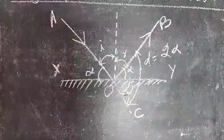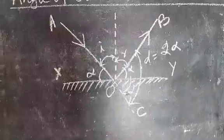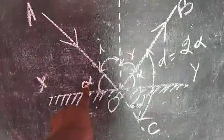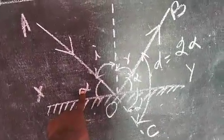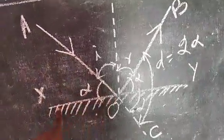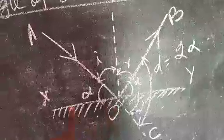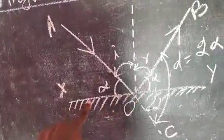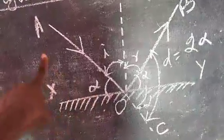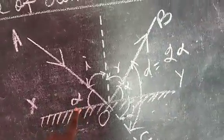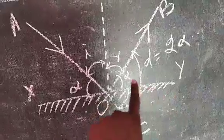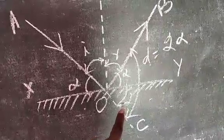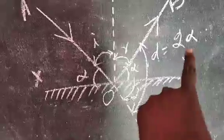The angle of deviation can also be derived using the glancing angle. Alpha is the glancing angle — the angle between the incident ray AO and the reflecting plane mirror surface, that is angle AOX, is called the glancing angle. Here, angle AOX equals alpha, angle BOY equals alpha, and angle YOC equals alpha. So the angle of deviation BOC equals 2 alpha, meaning the angle of deviation D equals 2 times alpha.